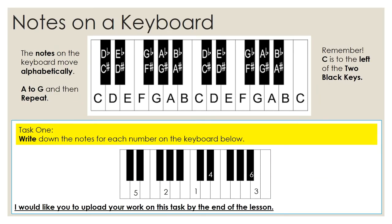Notes on a keyboard. The notes on the keyboard move alphabetically, so that means it goes from A to G and then it just repeats. So there's no note H. When you get to G, you should go back to A. For example, if you look, you can see note D. The notes to the right of note D will always be note E, the white notes. And then after E will be F.